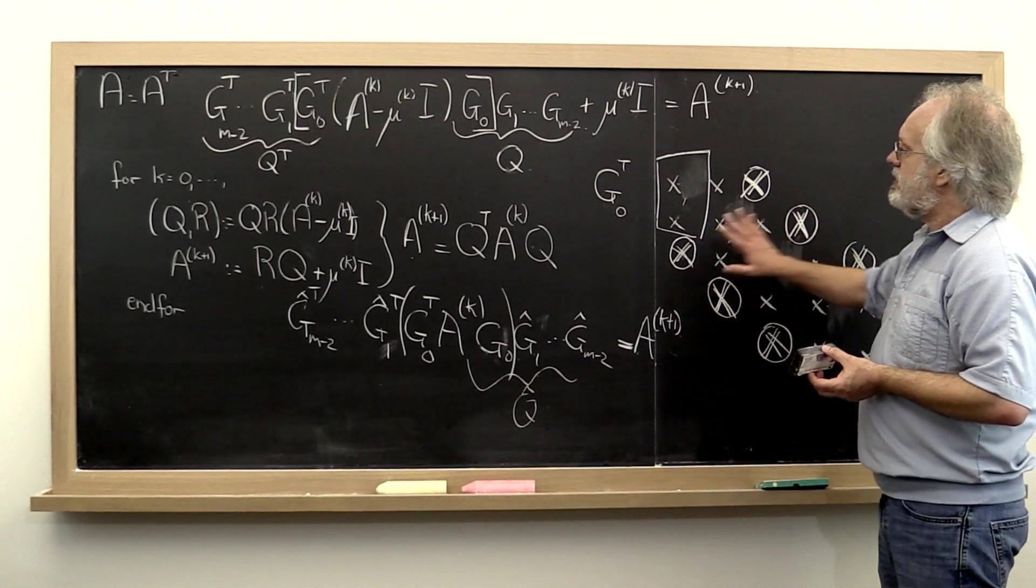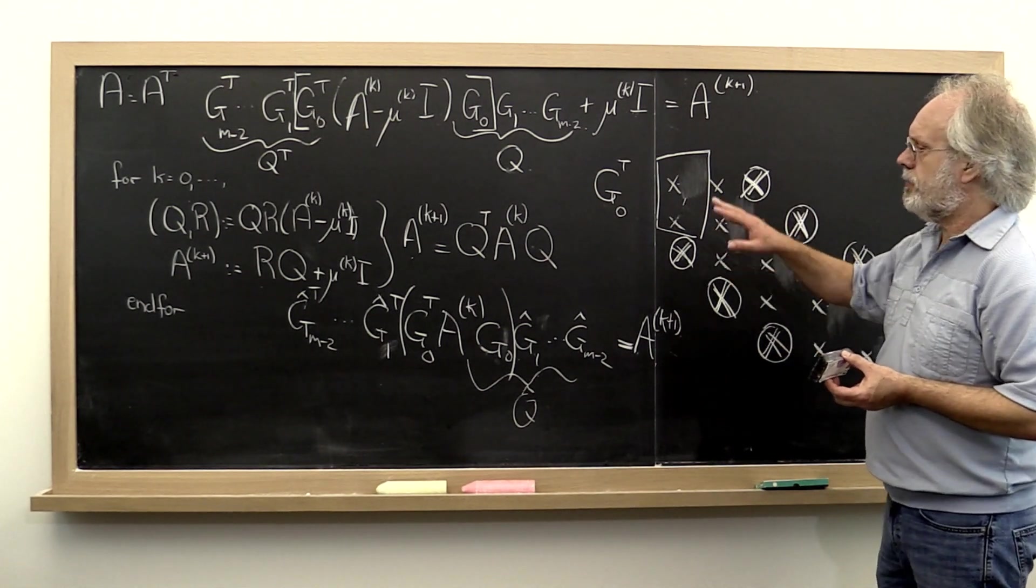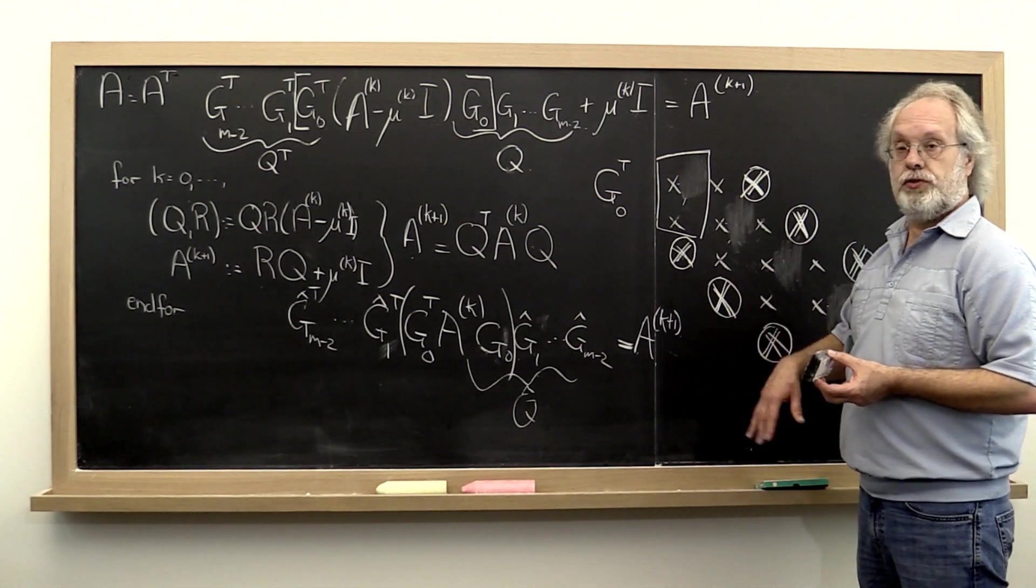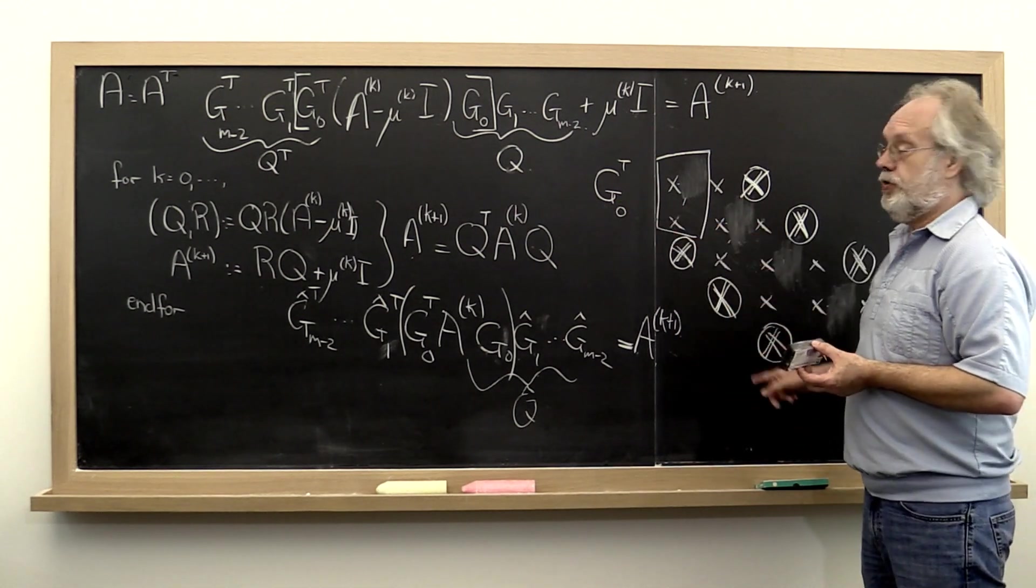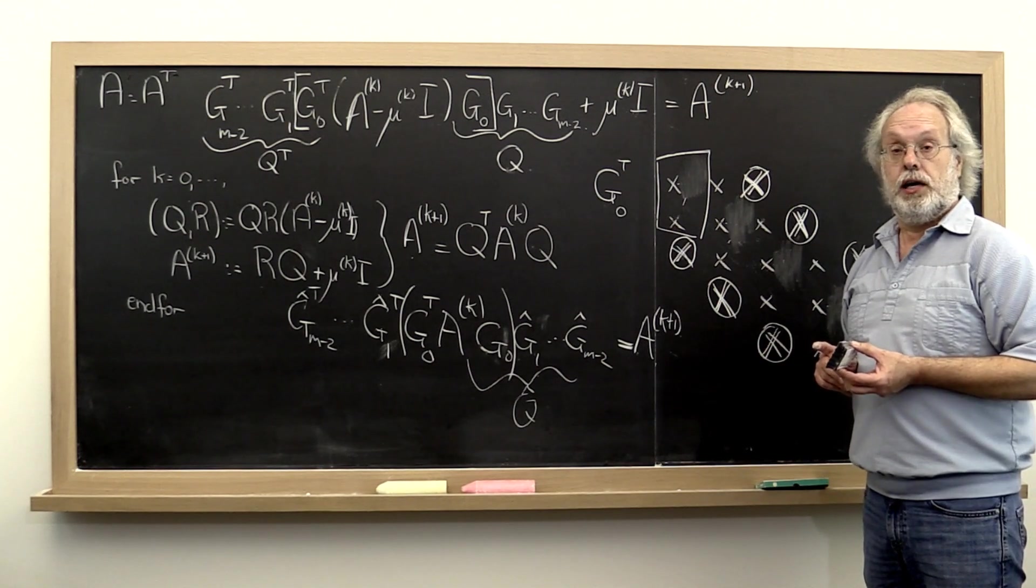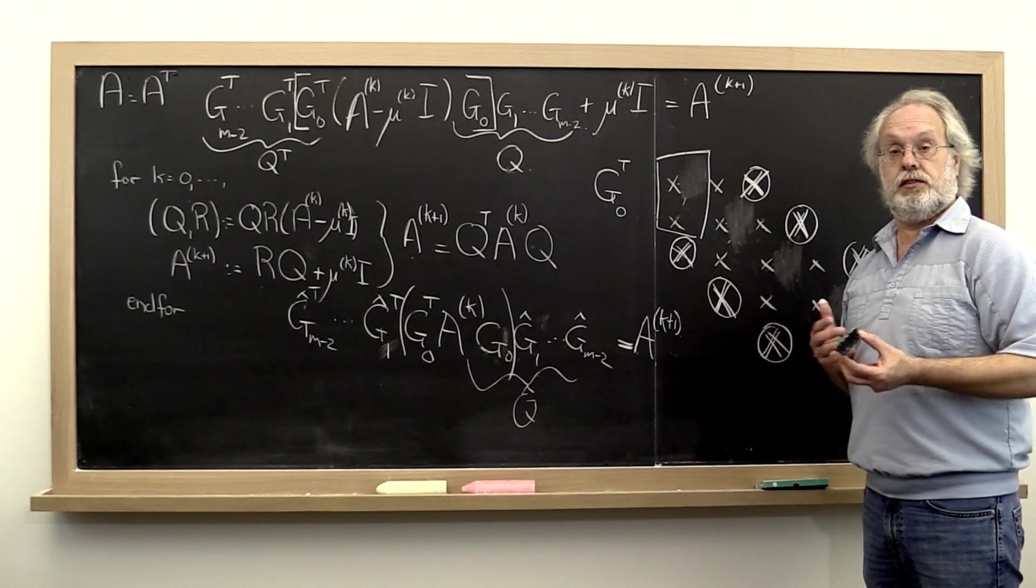And notice that every change that's made to our matrix to get from the current matrix to the next one only involves unitary matrices. And we know that that has all kinds of nice stability properties.